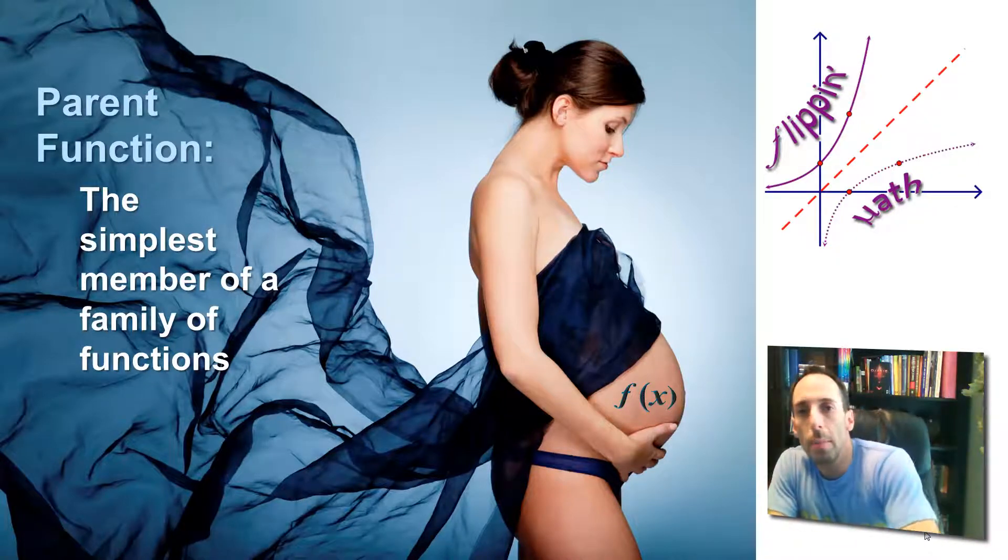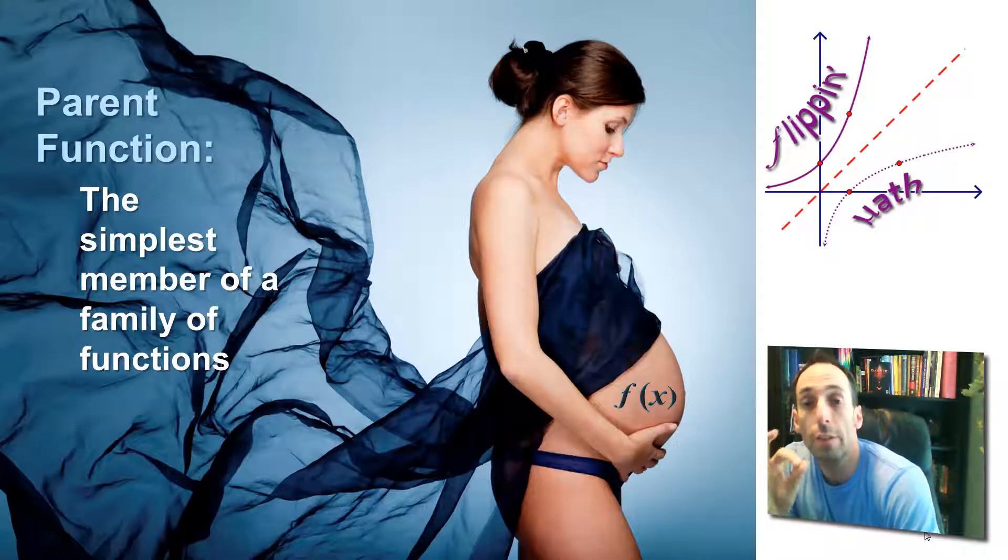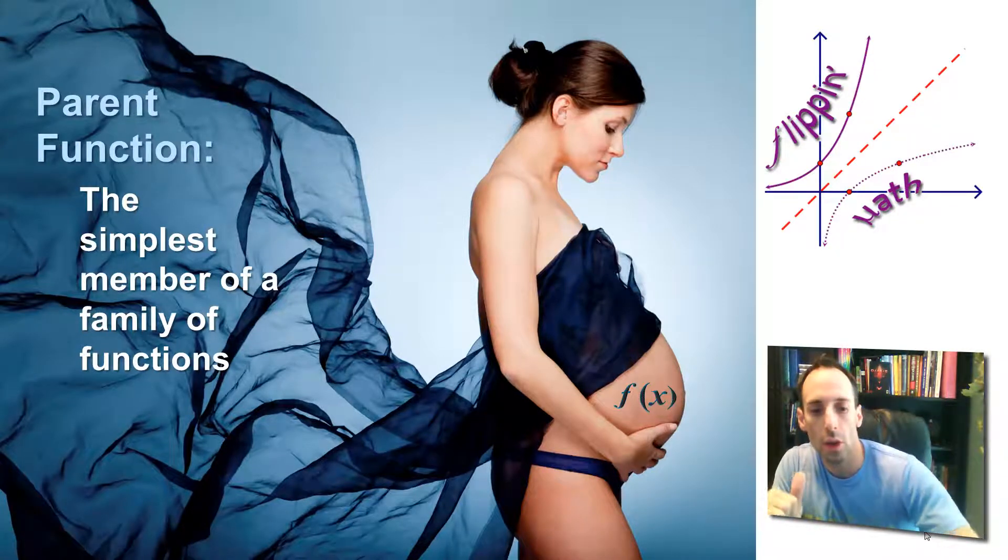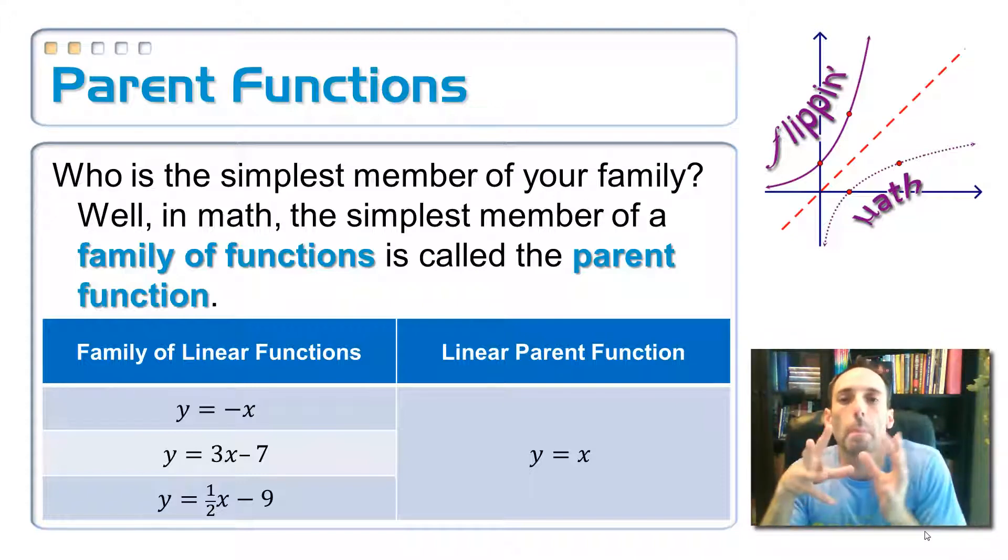And what we said before was that a parent function is the simplest member of a family of functions. So remember, if I have something like linear functions, I can have y equals negative x, y equals 3x minus 7, y equals one-half x minus 9. All of those belong to the family of linear functions. Basically, you can write it as y equals mx plus b. If I break it down to its simplest form, it's just y equals x.